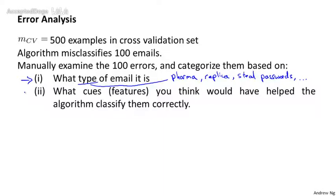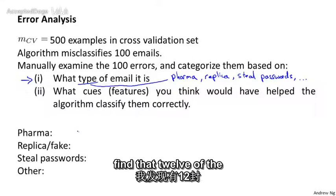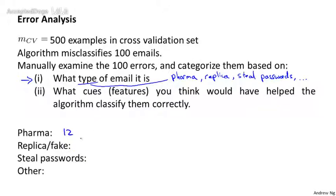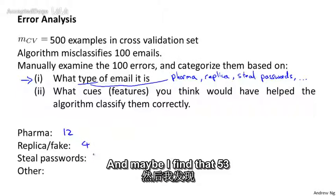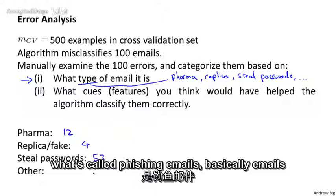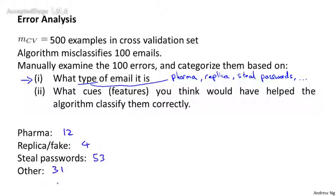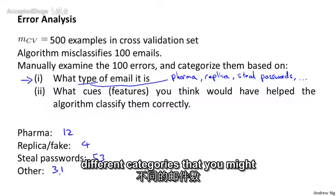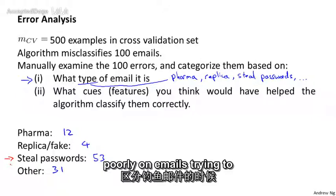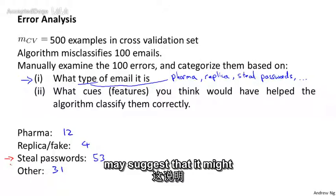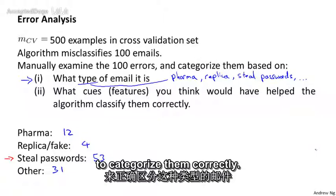So in terms of classifying what type of email it is, I would actually go through and count up, of my 100 emails, maybe I find that 12 of them are pharma emails. And maybe four of them are emails trying to sell replicas. And maybe I find that 33 of them are these phishing emails, basically emails trying to persuade you to give them your password. And then 31 emails are other types of emails. And it's by counting up the number of emails in these different categories that you might discover, for example, that the algorithm is doing really particularly poorly on emails trying to steal passwords. And that might suggest that it might be worth your effort to look more carefully at that type of email and see if you can come up with better features to categorize them correctly.